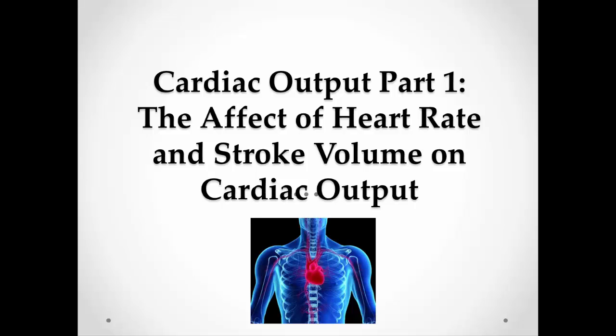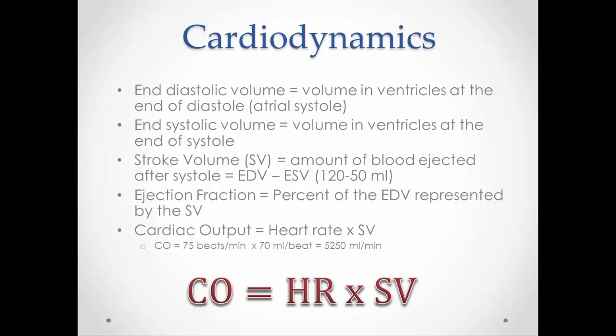So this one will just be an overview of the effects of heart rate and stroke volume on cardiac output. Let's first get some definitions in. End-diastolic volume is the volume in the ventricles at the end of diastole — right before the ventricles are ready to contract, so it's how full we can make those ventricles. End-systolic volume is the volume in the ventricles at the end of systole — basically after the ventricles have contracted and ejected as much blood as they can, this is how much blood is still left in the ventricles, a kind of residual volume.